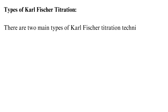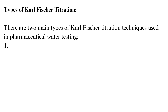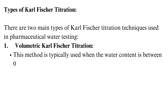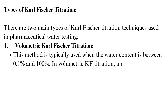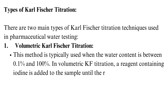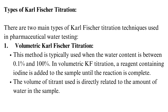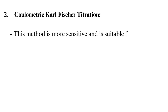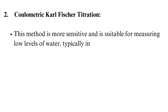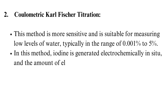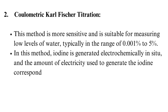There are two main types of Karl Fischer titration: Volumetric KF titration, typically used when the water content is between 0.1% and 100%, where a reagent containing iodine is added to the sample until the reaction is complete, and the volume of titrant used is directly related to the water content. Coulometric KF titration is more sensitive, suitable for measuring low levels of water typically in the range of 0.001% to 5%, where iodine is generated electrochemically in situ and the amount of electricity used corresponds to the water content.